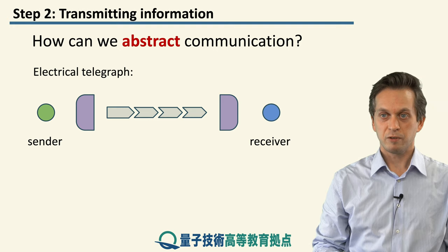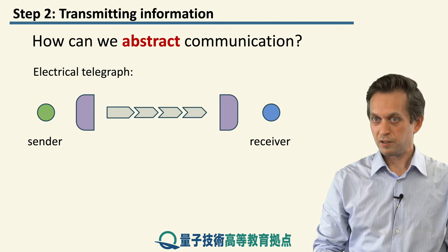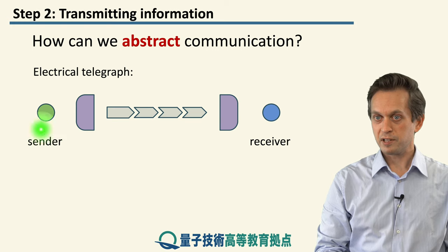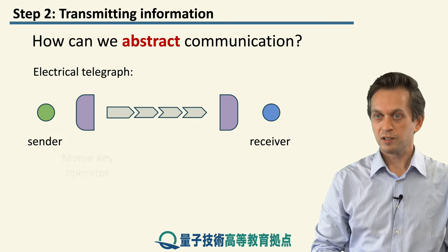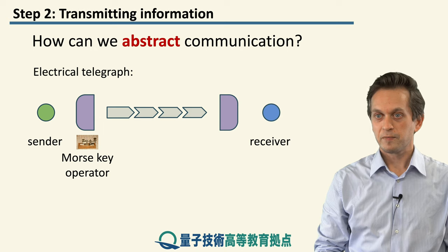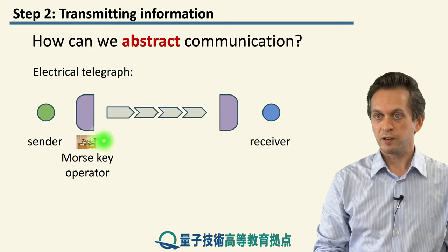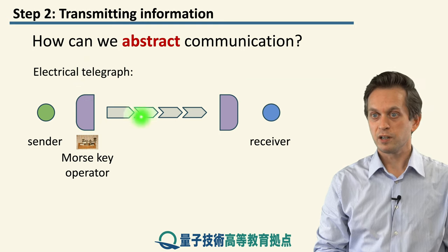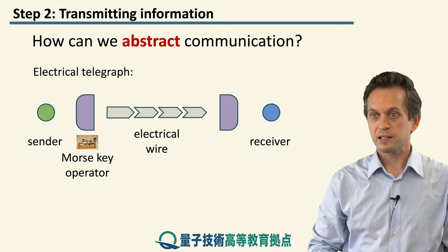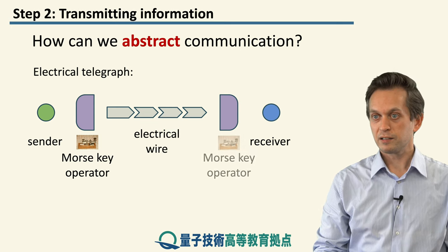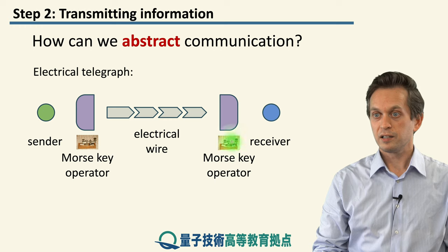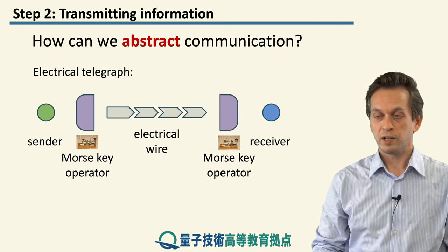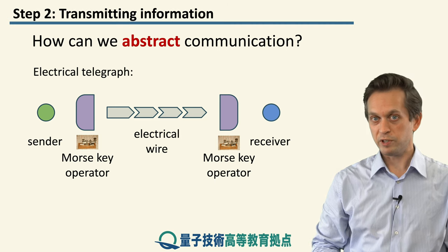For example, if we're talking about the electrical telegraph, the sender brings a message to the telegraph company, where they talk to the Morse code operator who encodes the message into Morse code, sends it down the electrical wire, and on the other side the operator then decodes the message, writes it out in legible form, and gives it to the recipient who can then read the message.